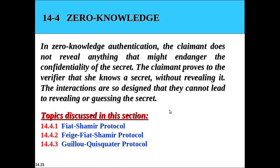This is part 2 of the lecture, where we will discuss zero-knowledge authentication. Previously we discussed password authentication, in which the claimant needs to send her secret to the verifier. Then we discussed challenge-response authentication, in which the claimant's secret is not sent to the verifier — the claimant applies a function on the challenge sent by the verifier that includes her secret. In zero-knowledge authentication, the claimant does not reveal anything that might endanger the confidentiality of the secret; instead, the claimant proves to the verifier that she knows a secret without revealing it.